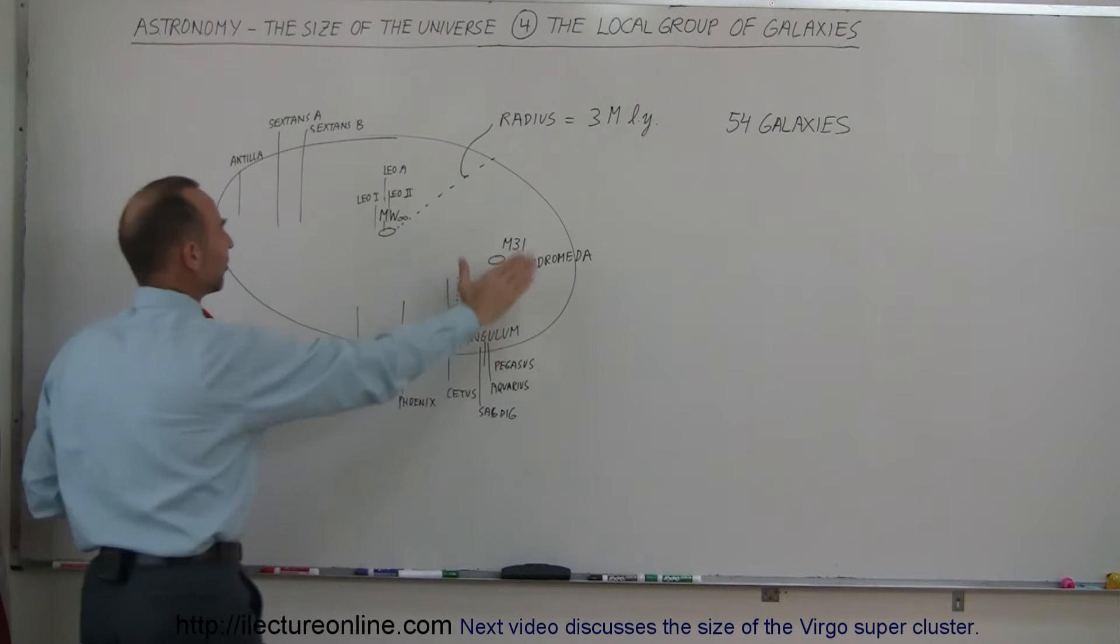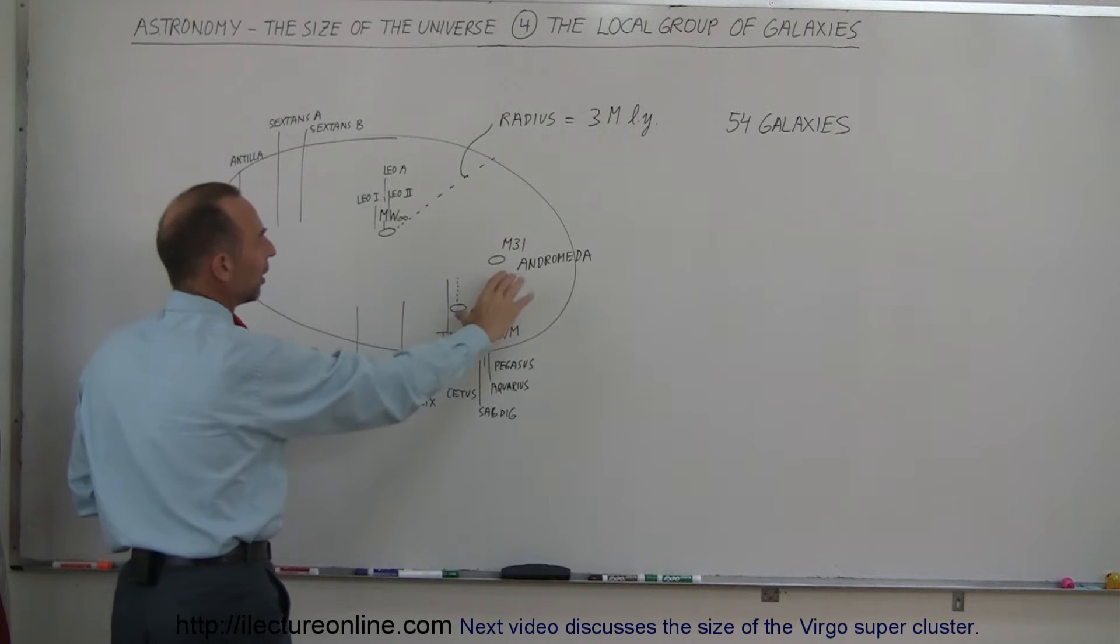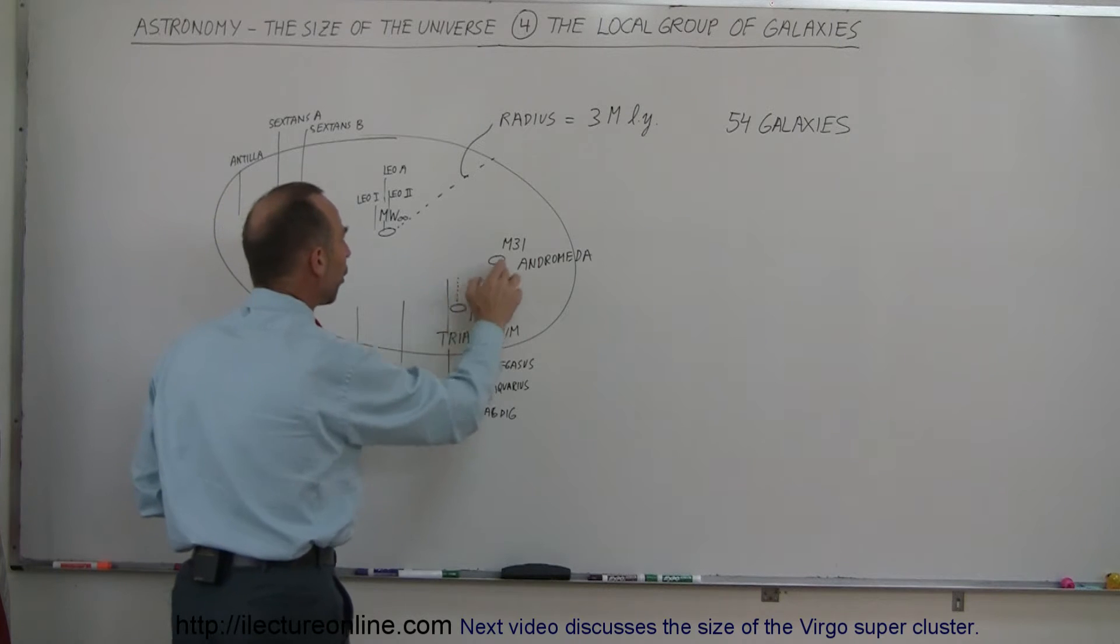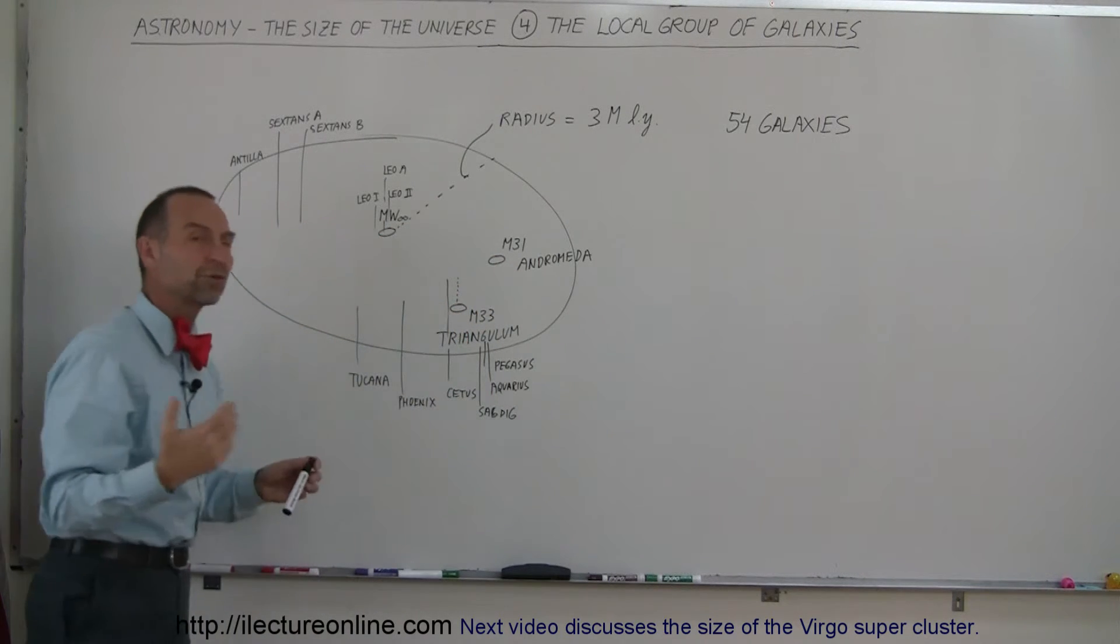Now, if we draw a disk with a radius of 3 million light years, we find that in one direction, fairly near to that disk, we find the Andromeda Galaxy and what we call Triangulum. All three - the Milky Way Galaxy, the Andromeda Galaxy, and M33 or Triangulum - are what we call spiral galaxies.